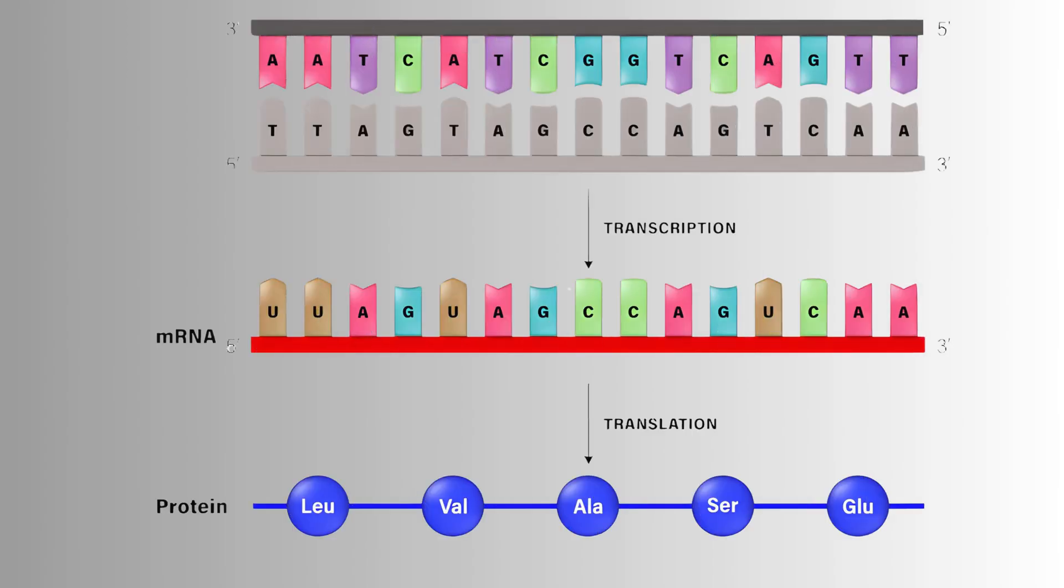Let's imagine DNA as the carrier of genetic information that determines how an organism functions. This information is encoded in the sequence of four nitrogenous bases. Their precise order in DNA represents the genetic code, which serves as the foundation for the production of all proteins in the cell.